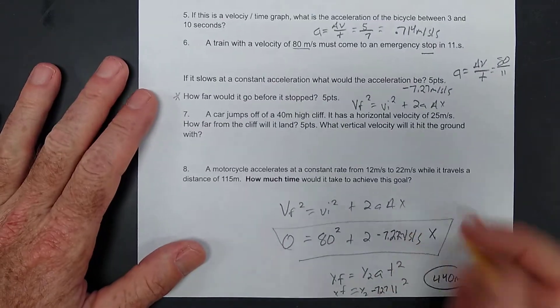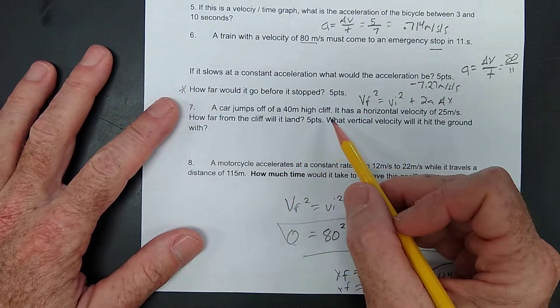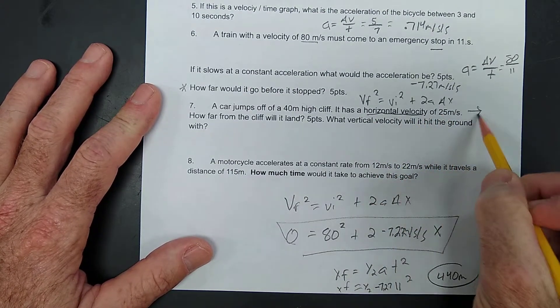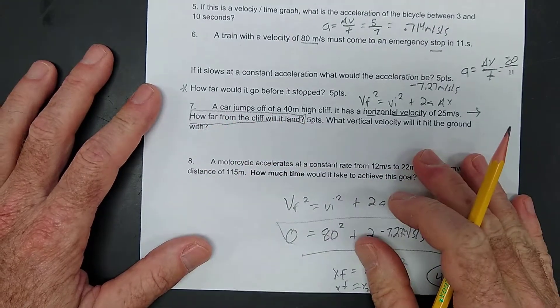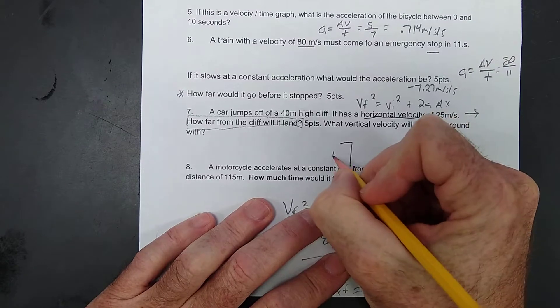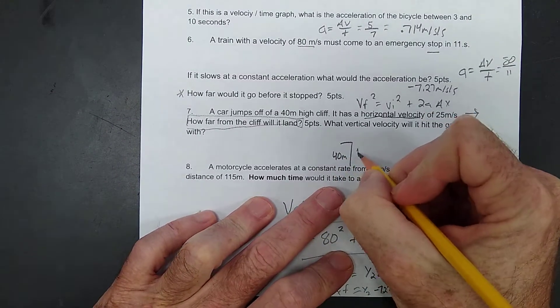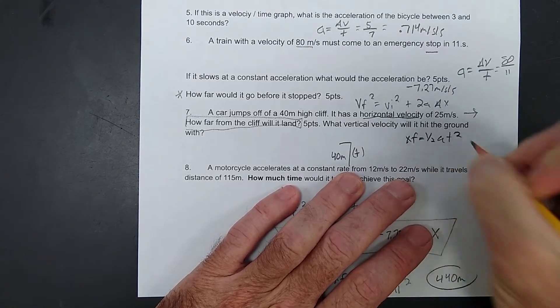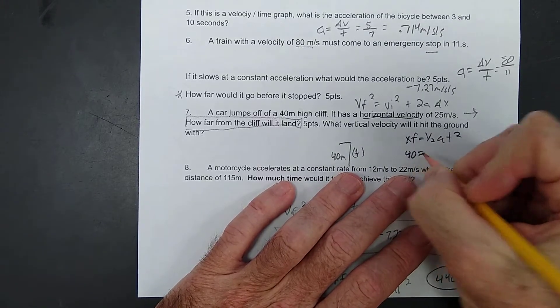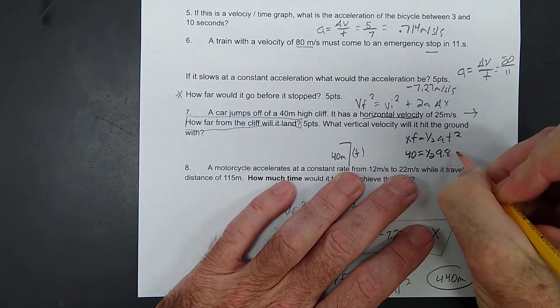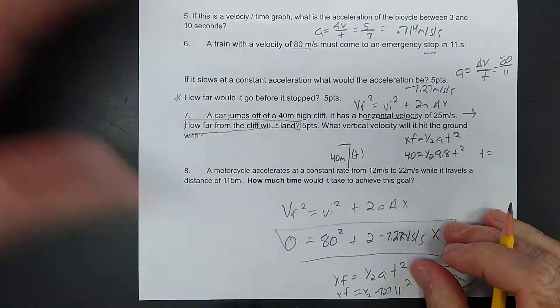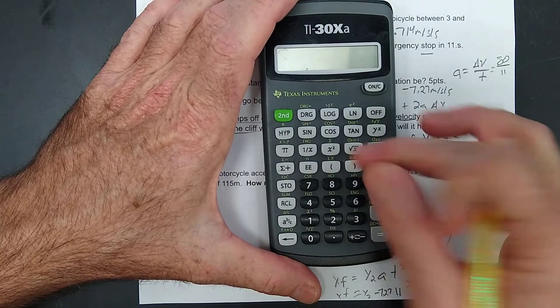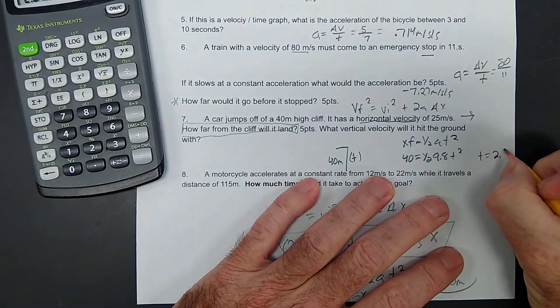Alright, let's keep rolling. A car jumps off of a 40 meter high cliff. It has a velocity of 25 meters per second sideways. How far from the cliff will it land? Okay. Now, this is just like our bullet dropped. This thing is dropping 40 meters. So, we need to figure out how long it's in the air. We can do that. XF equals one-half AT squared. We're assuming we're on the planet Earth. So, 40 equals one-half 9.8 times T squared. That's going to give us our T. So, that's going to be 40 divided by 4.9 equals square root. I'm just skipping some Algebra 1. 2.9 seconds.